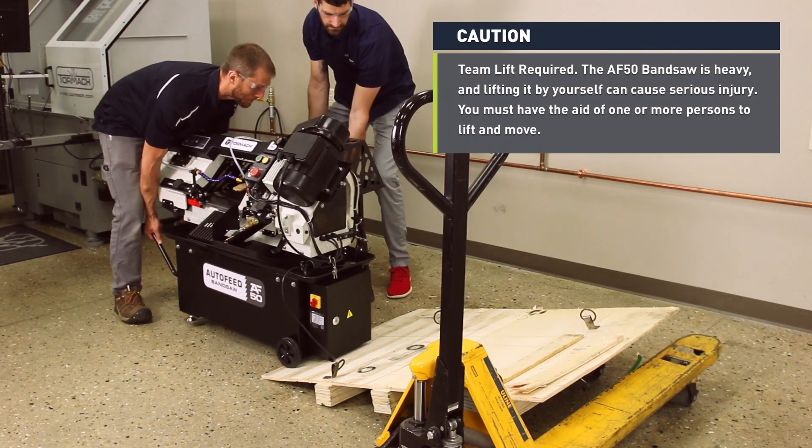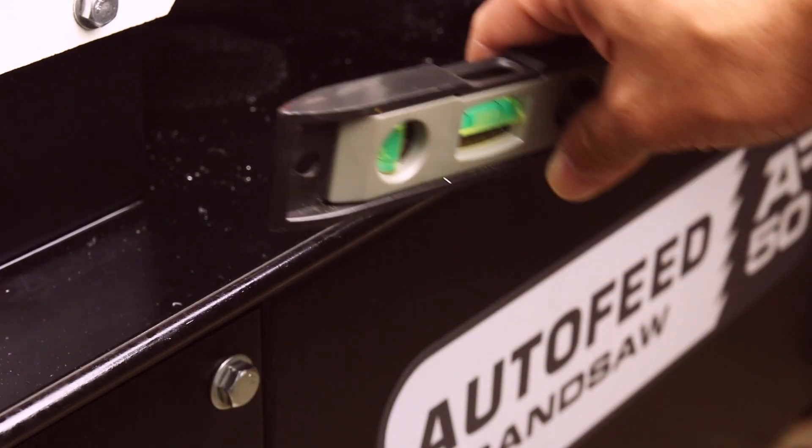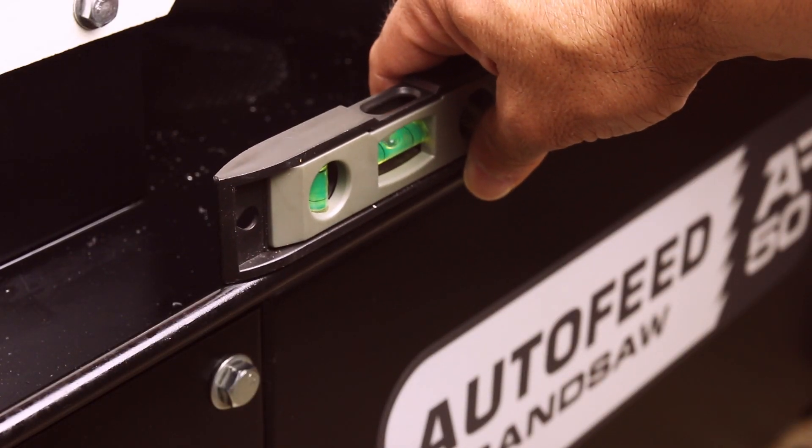Once you've taken the AF50 bandsaw off the pallet, you must verify that it's approximately level. This will help with things like coolant flow but does not impact the machine performance.